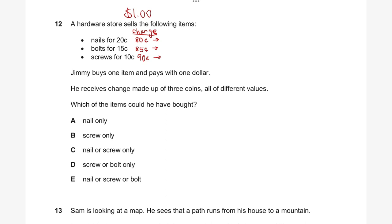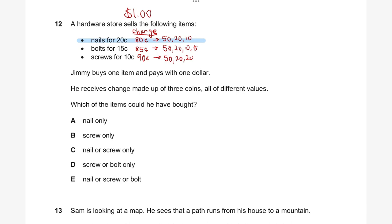For 80 cents: a 50 cent coin, a 20 cent coin, and a 10 cent coin — that works, three different values. For 85 cents: 50, 20, 10, and 5 — that's four coins, so it doesn't work. For 90 cents: 50, 20, and another 20 — two coins are the same, so that doesn't work. The only option that uses three coins of different values is nails for 20 cents. So the answer to question 12 is A, nails only.